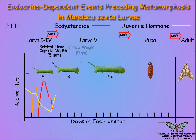Second, the attainment of a critical weight of five grams during the fifth larval instar indicates the larvae has grown sufficiently to survive pupation and metamorphosis. When the five-gram critical weight is attained, juvenile hormone synthesis stops and juvenile hormone esterase increases to eliminate all circulating juvenile hormone.